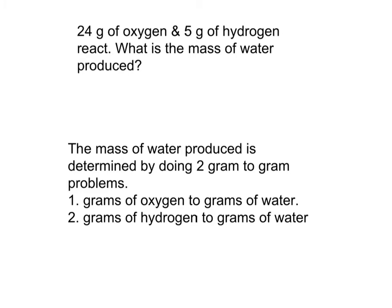They're going to react, and we want to determine the mass of water. To do this problem, you have to do two gram-to-gram problems. One problem is changing grams of oxygen to grams of water, and the second is changing grams of hydrogen to grams of water. Notice that water is the product, and we're changing both reactants to one product so we can compare the amount of product produced.